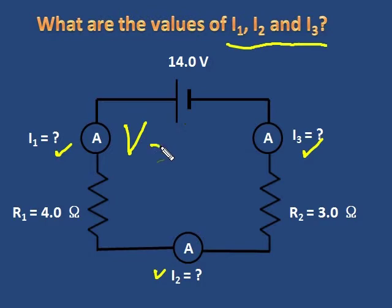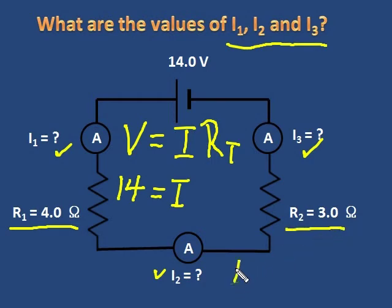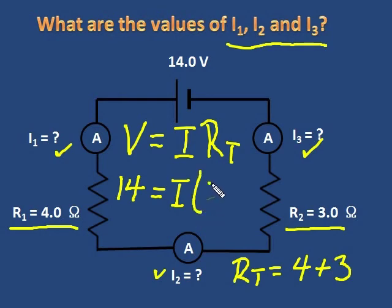I also know that total voltage equals current times total resistance. The voltage supplied is 14 volts, and that equals I — my unknown. If I know I, I know I1, I2, and I3. This is a series circuit with a 4 ohm and a 3 ohm resistor in series, so I just add: 4 ohms plus 3 ohms gives a total resistance of 7 ohms. The current is simply 14 over 7.